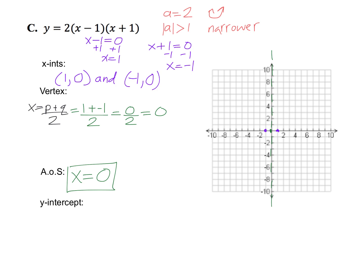Now to find the y-coordinate of the vertex, we can go back to the equation and replace both of the letter x's with 0. y equals 2 times 0 minus 1 times 0 plus 1. Simplify inside the parentheses, and that gives us 2 times negative 1 times positive 1. And when you multiply those three numbers together, you get a negative 2, which means that our vertex is located at 0, negative 2. I'm going to plot that here on my graph, 0, negative 2.